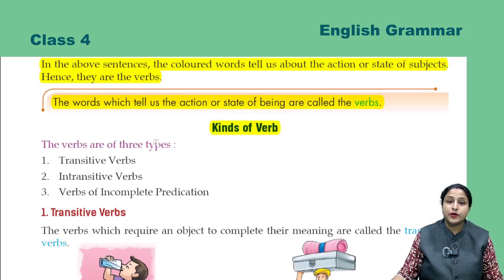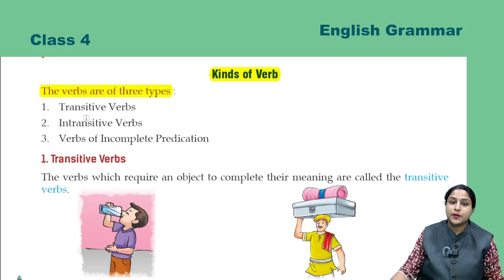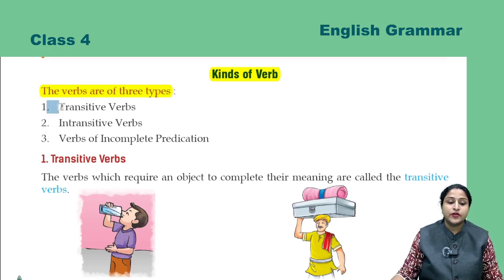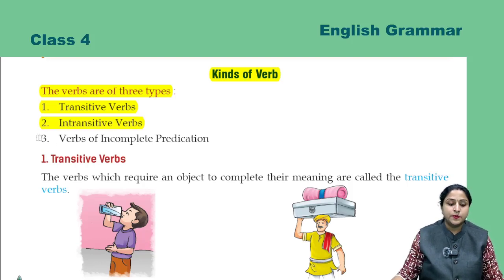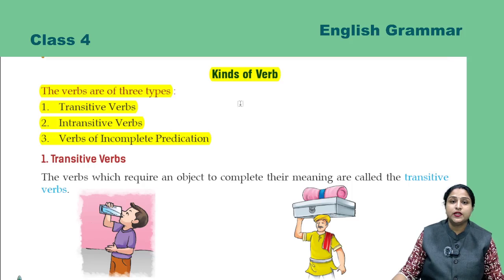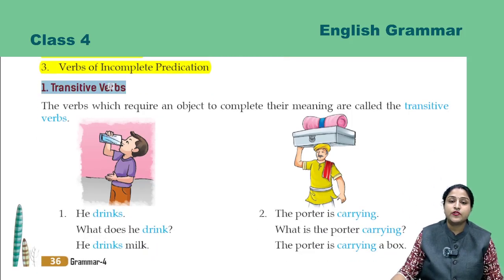Kinds of verb — verb ke kinds. The verbs are of three types. First, transitive verbs. Second, intransitive verbs. Third, verbs of incomplete predication. Let's first read about transitive verbs.